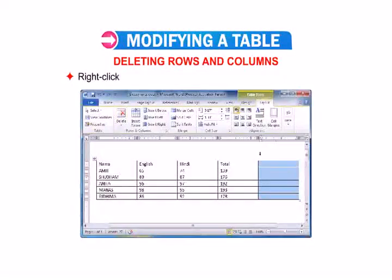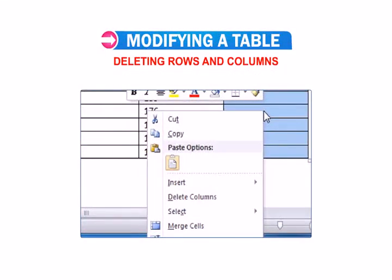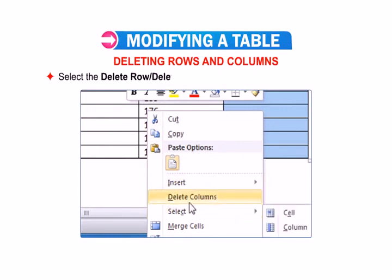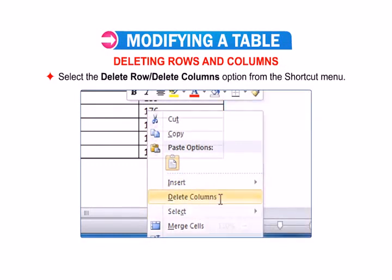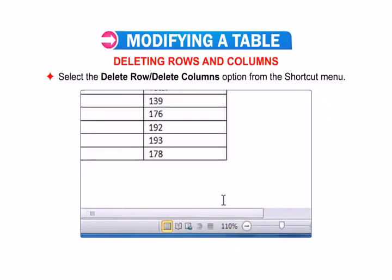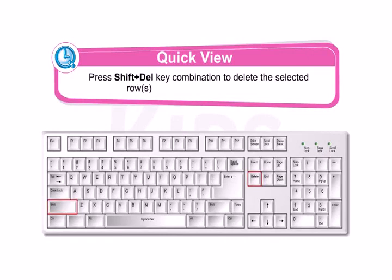Or, right-click on the selected row or columns that you wish to delete, and select the Delete Row or Delete Columns option from the shortcut menu. Students should know that pressing Shift+Delete deletes the selected rows and columns from the table.